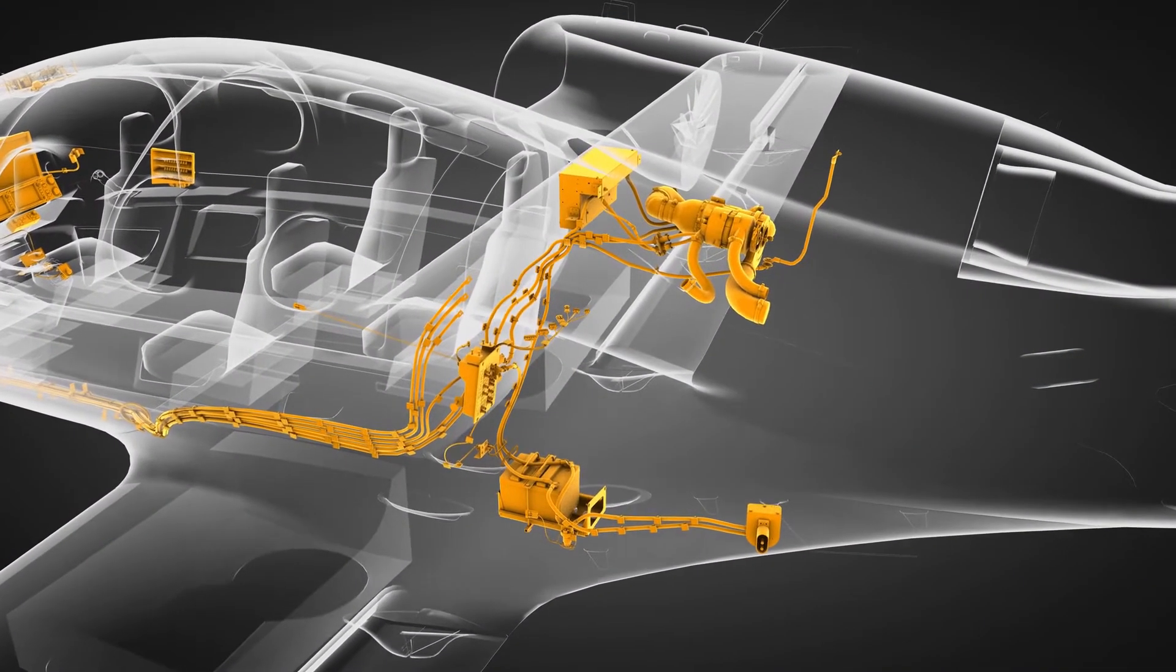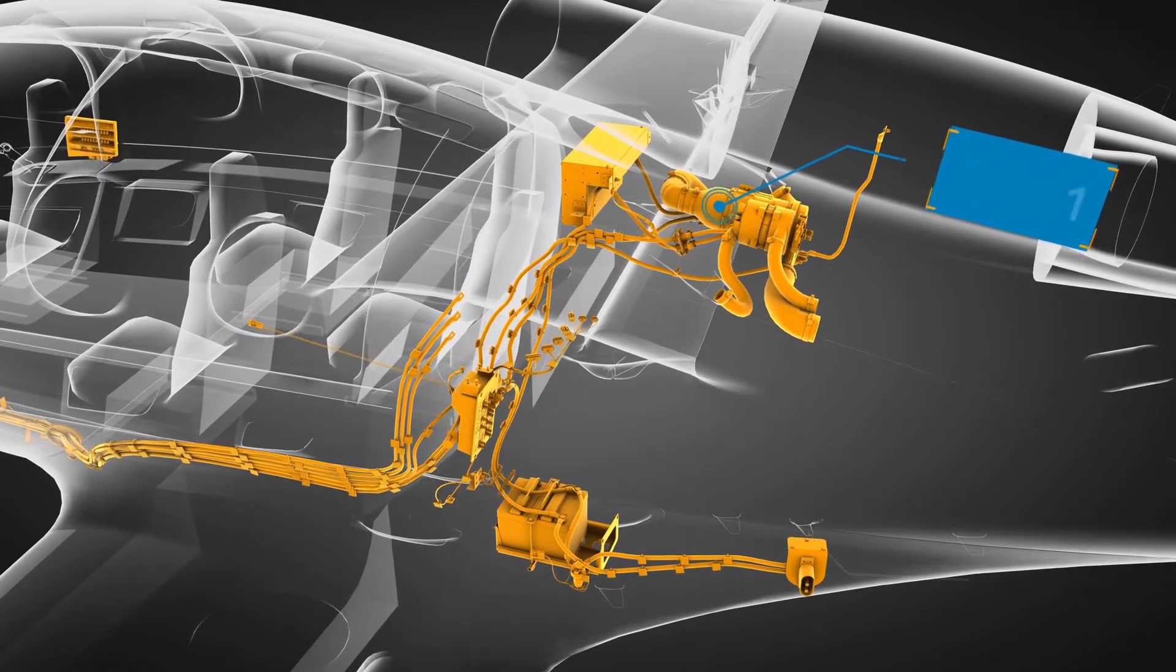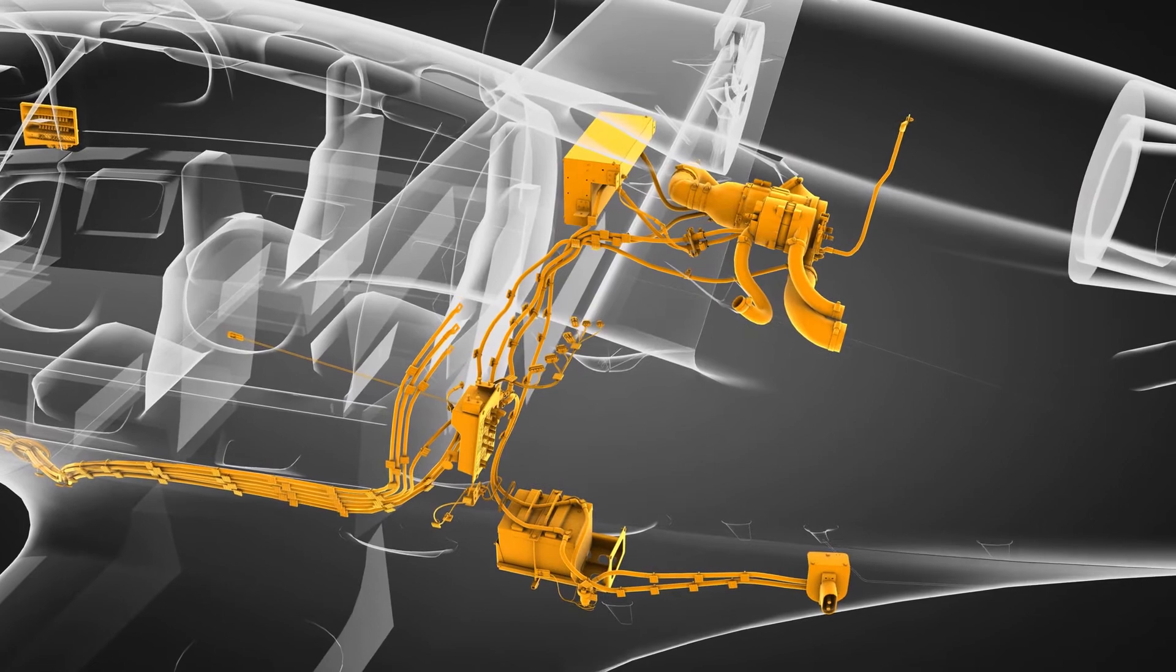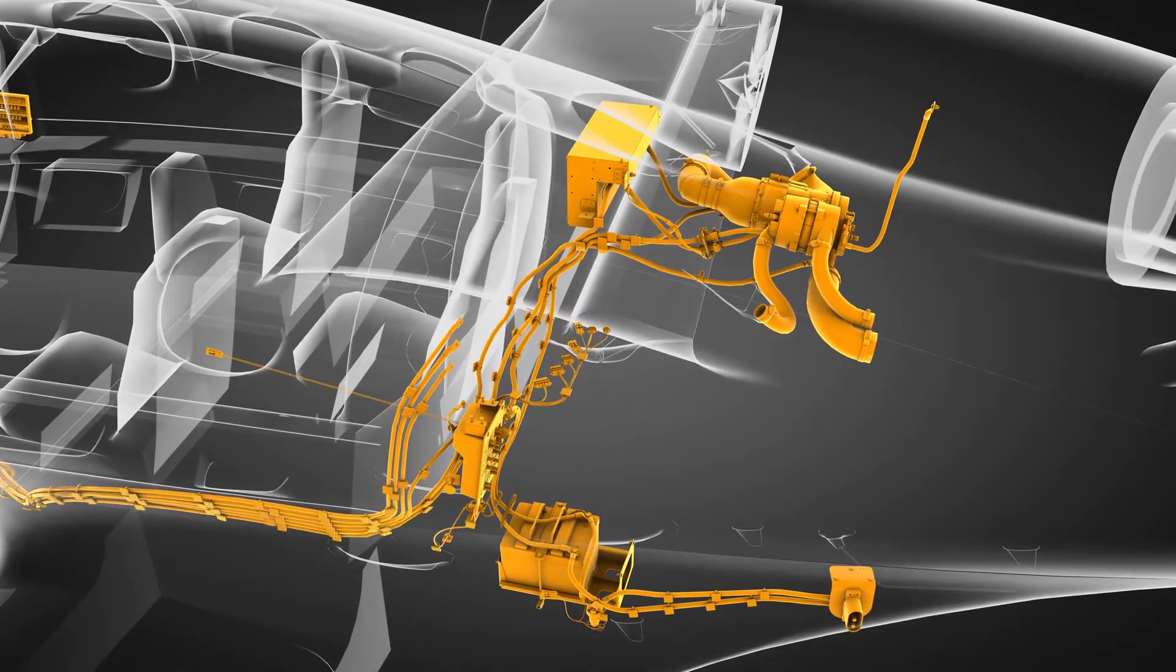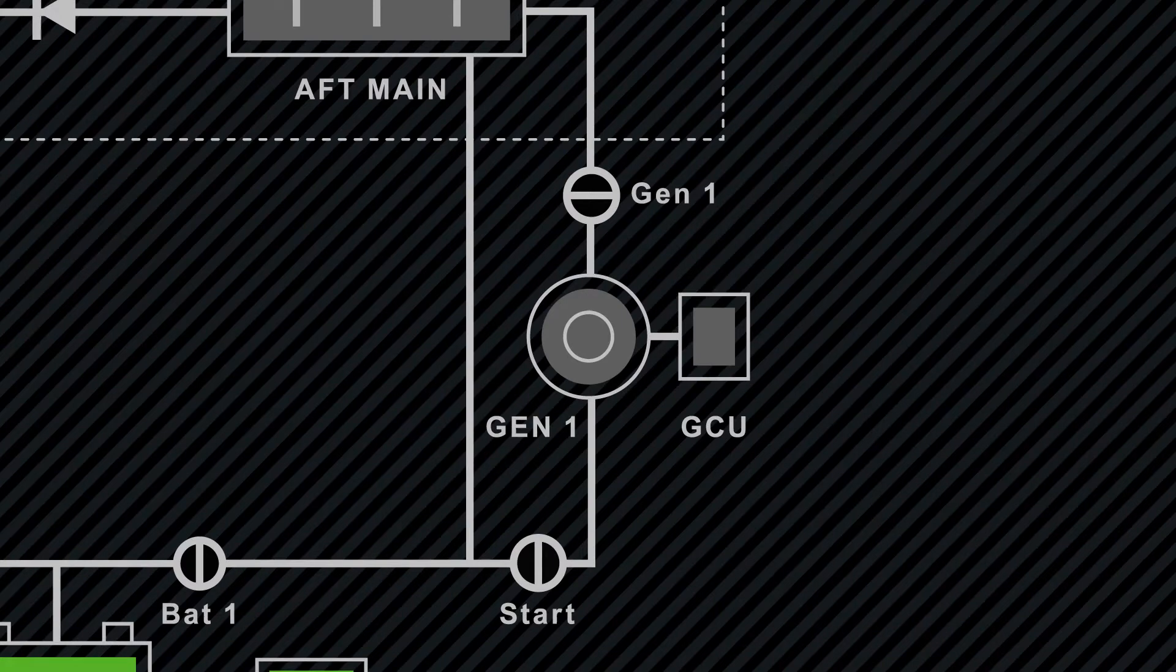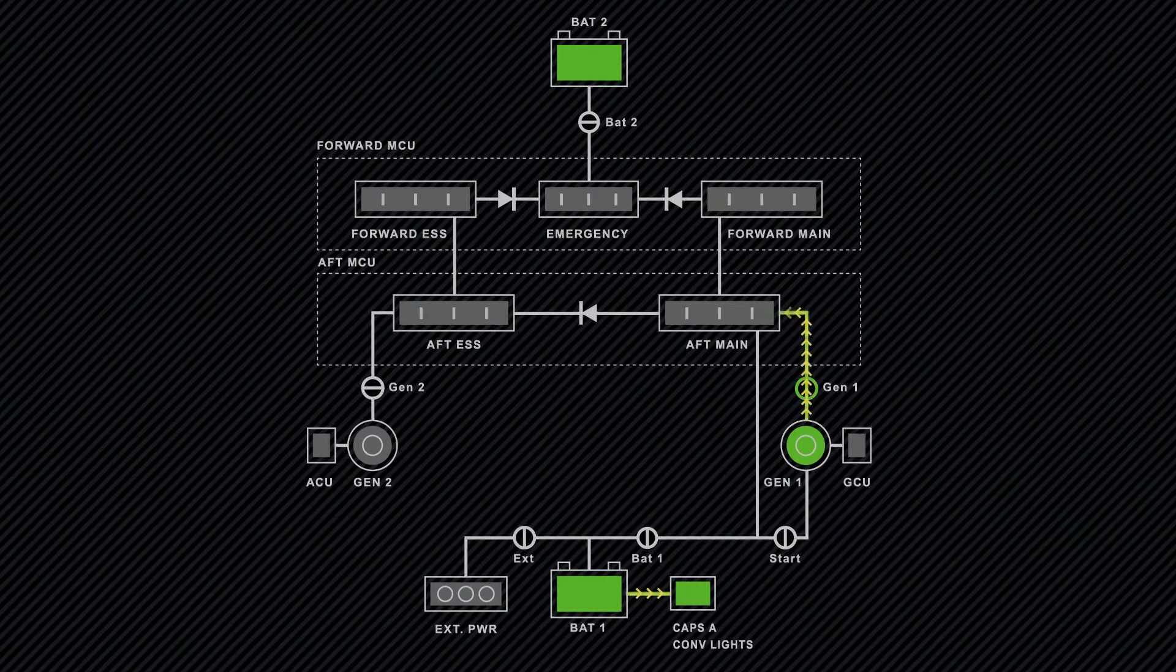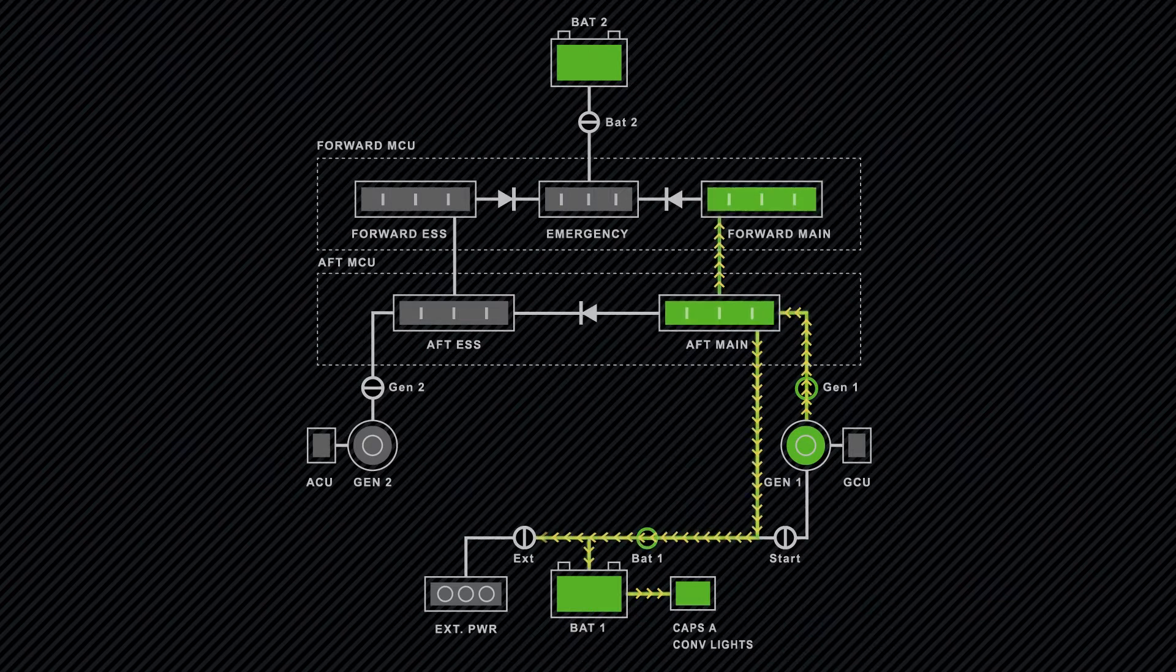This starter generator, which we'll refer to as Gen 1, is installed on the accessory engine gearbox and is monitored and regulated by a generator control unit, or GCU. Under normal conditions, Gen 1 powers the main bus and charges Battery 1.